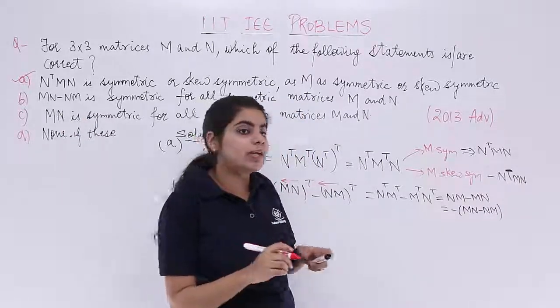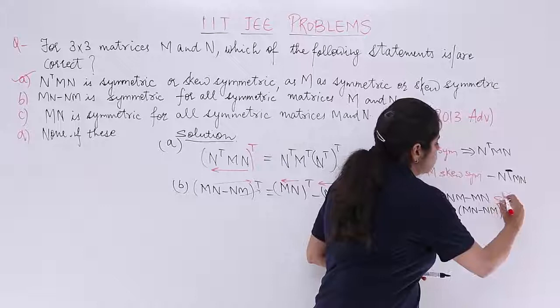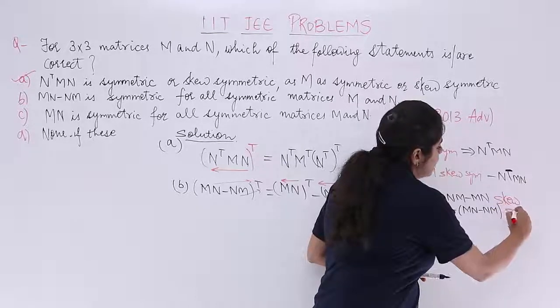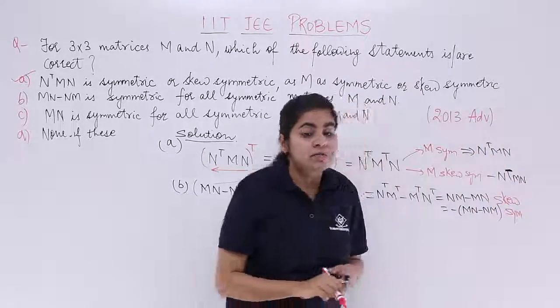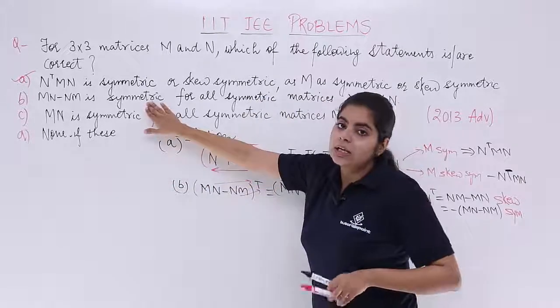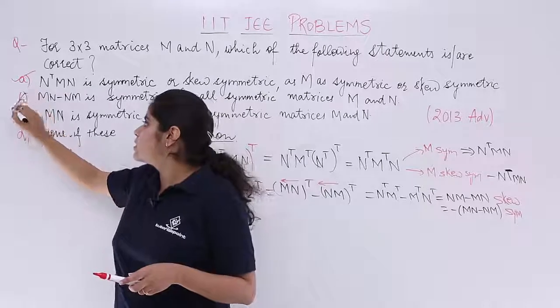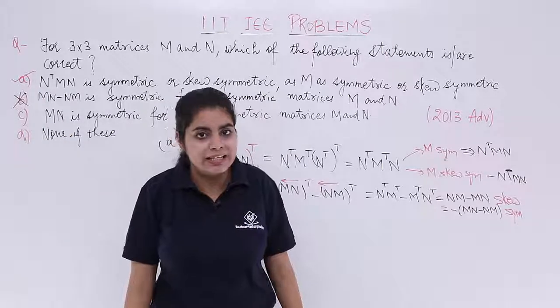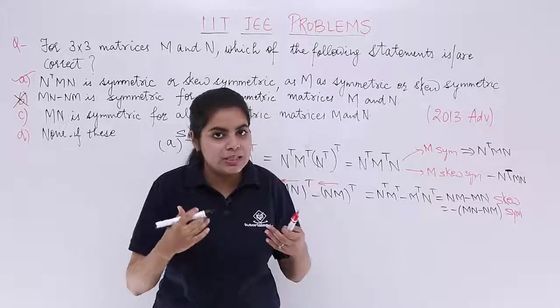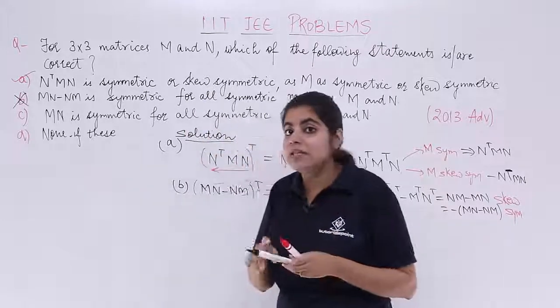The expression is same. The only difference is of the negative sign. Negative sign means it has become what kind of an expression? It is skew symmetric and not symmetric. When it is skew symmetric, the option goes directly incorrect because it says it should have been symmetric but it is skew symmetric. So the option is incorrect.